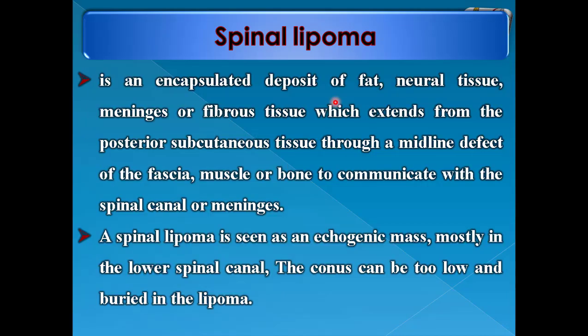Spinal lipoma is an encapsulated deposit of fat, neural tissue, meninges, or fibrous tissue which extends from the posterior subcutaneous tissue through a midline defect of the fascia, muscles, or bone to communicate with the spinal canal or meninges. A spinal lipoma is seen as an echogenic mass, mostly in the lower spinal canal. The conus can be too low and buried in the lipoma.